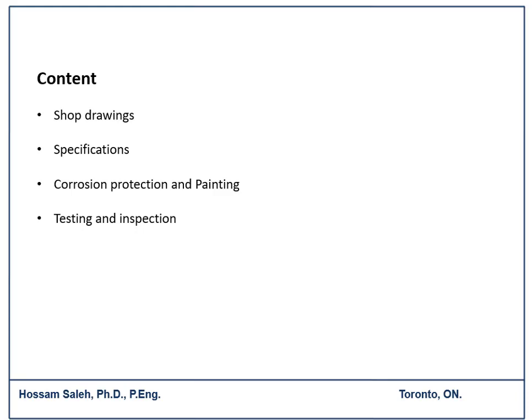When the manufacturing process starts, the supplier will create drawings showing the intent and details of the member they are going to build, based on the structural drawings. For example, if you have reinforced concrete members, the reinforcing bars — the length, size, cut, and overlapping length — should be created and sent to the consultant to review. After they get approval from the consultant, they start building the member in the shop.